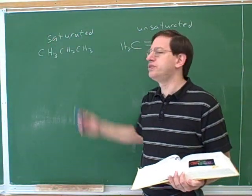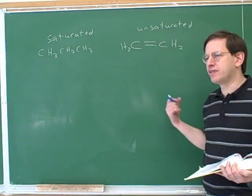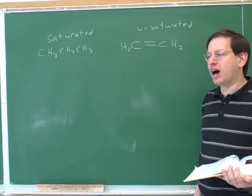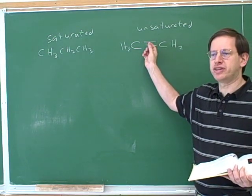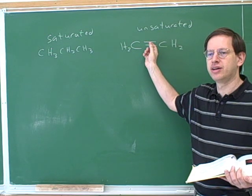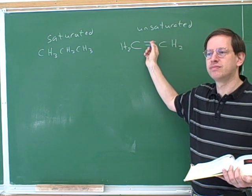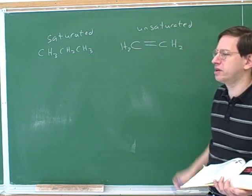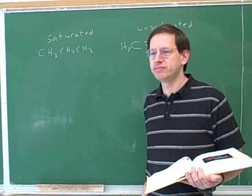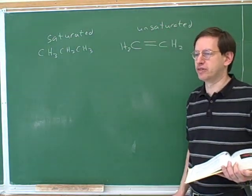So saturated means no double or triple bonds. Or another way of putting it is, do you guys remember those ideas of sigma and pi bonds? How many sigma bonds are there here? One. And how many pi bonds? One pi bond. So an unsaturated compound has some pi bonds, and a saturated compound has no pi bonds, which means no double or triple bonds.